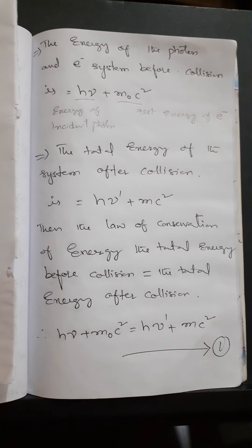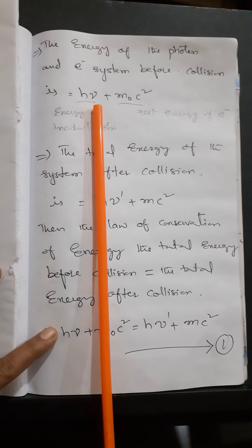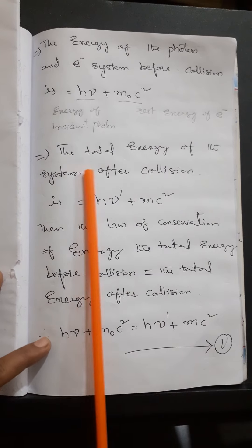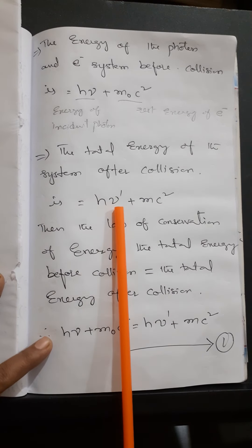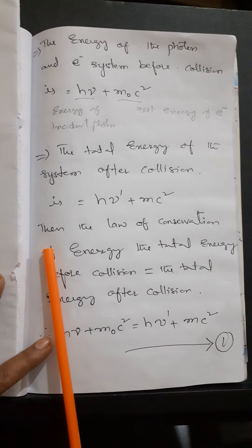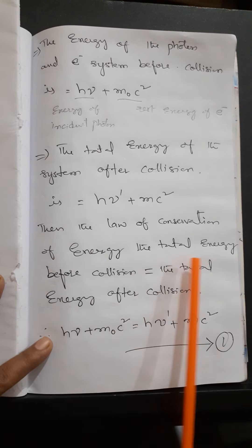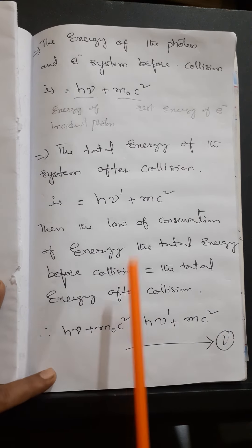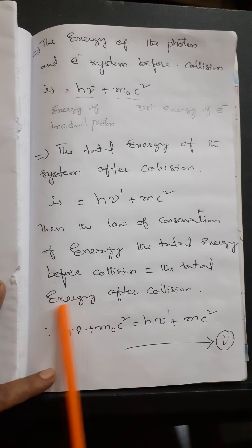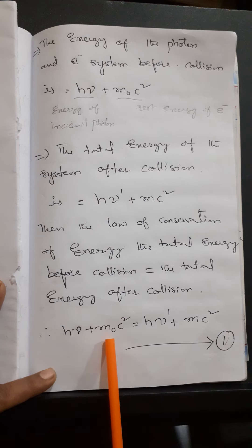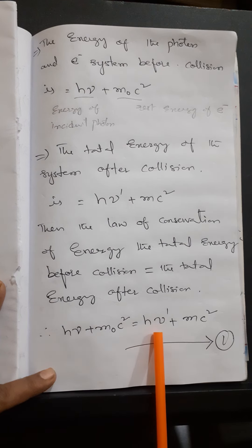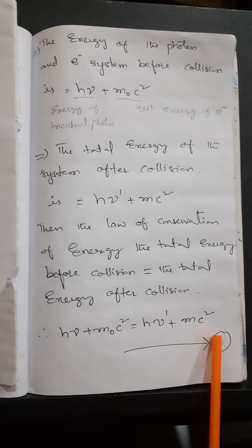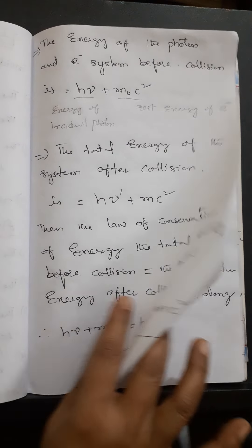The total energy of the photon and electron system before collision is h·nu + m₀c², and after collision it is h·nu' + mc². By the law of conservation of energy, total energy before equals total energy after, giving us: h·nu + m₀c² = h·nu' + mc². Let this be Equation 1.